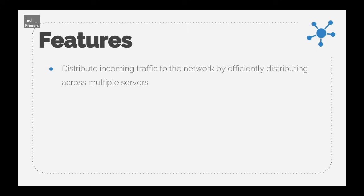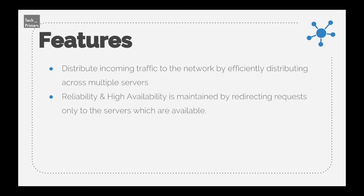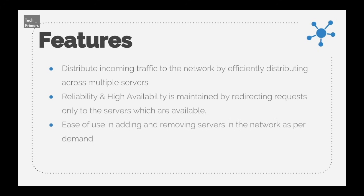Load balancers are generally used to distribute incoming traffic to the network by efficiently distributing requests across multiple servers. Reliability and high availability are maintained by redirecting requests only to servers which are available. If servers are unavailable or offline, those servers are removed from the load balancing setup. Internally, load balancers maintain a health check of all available servers.